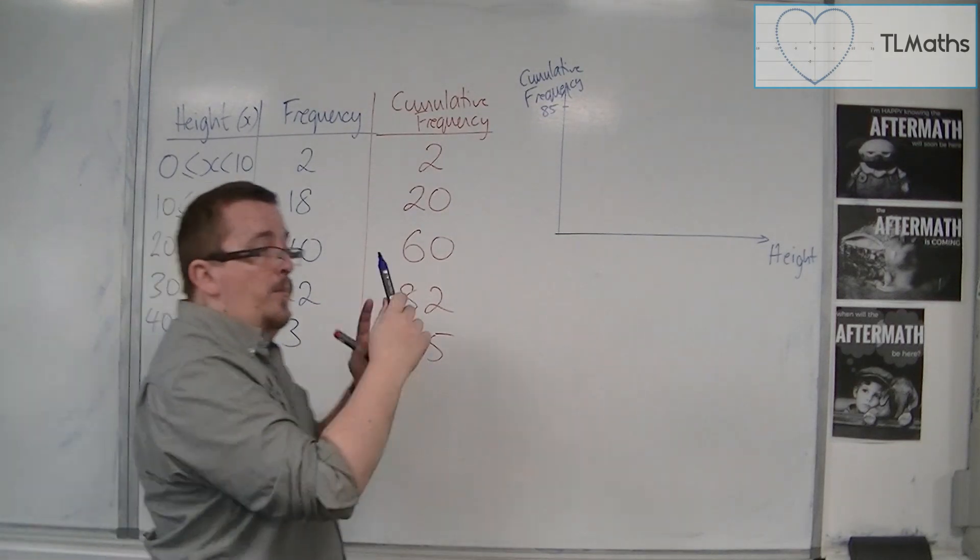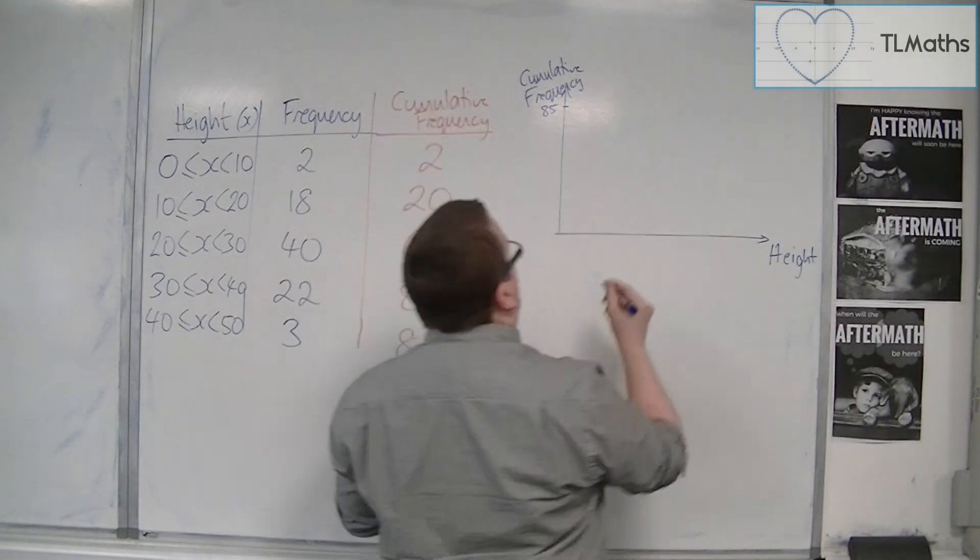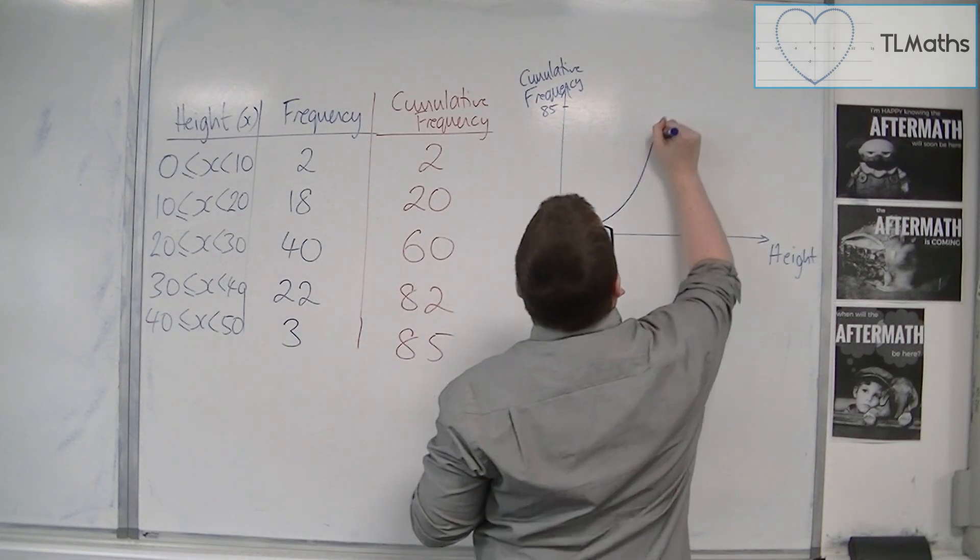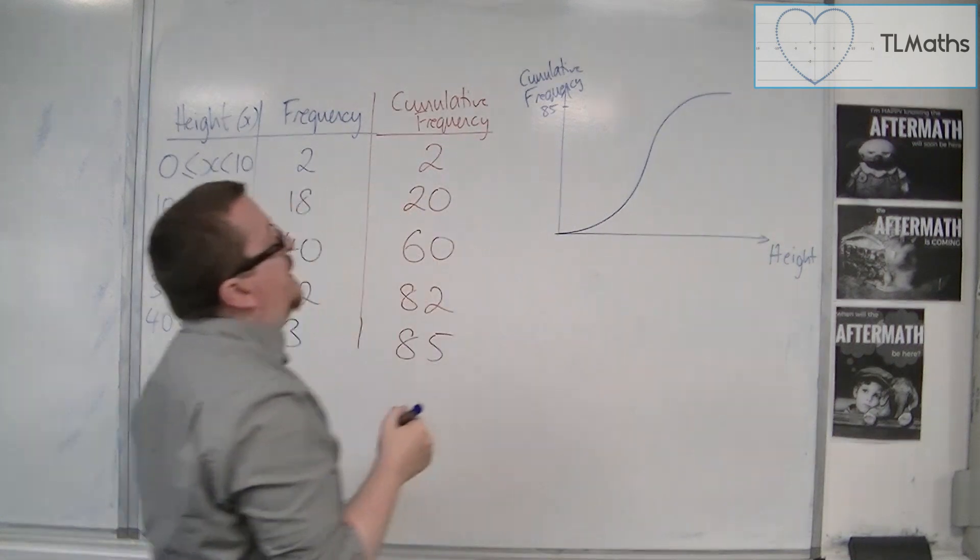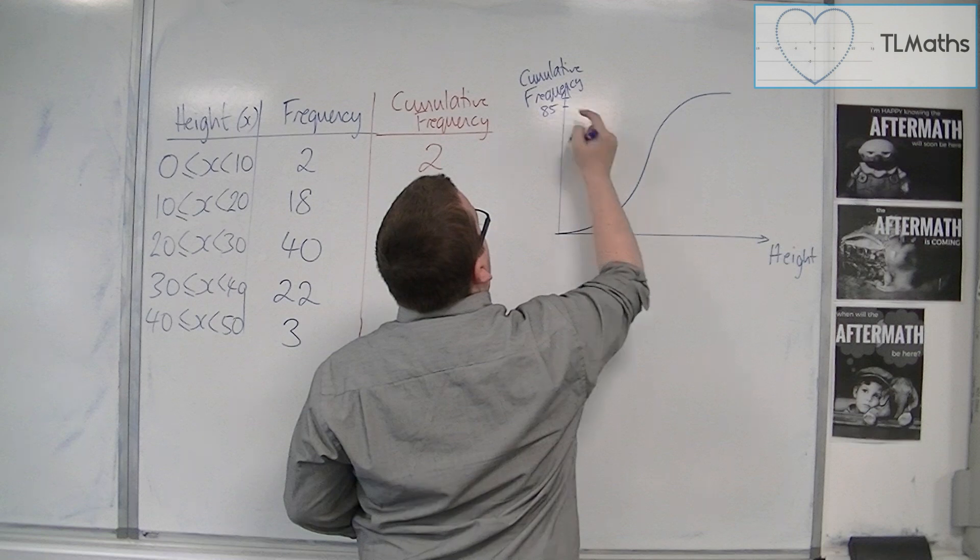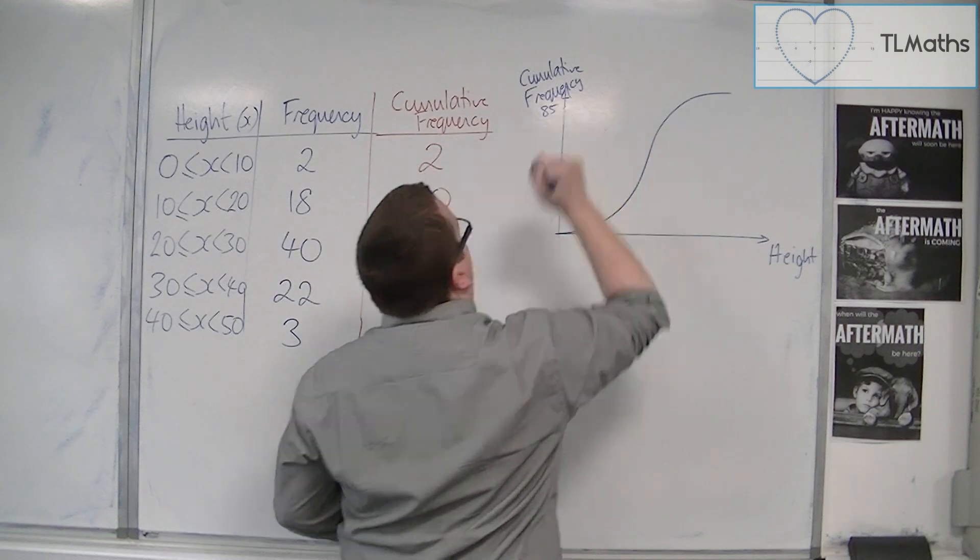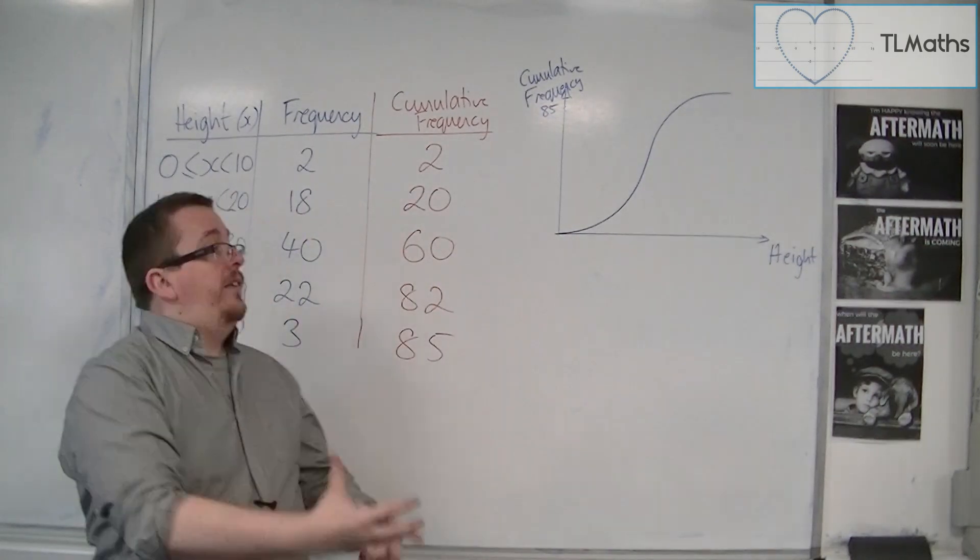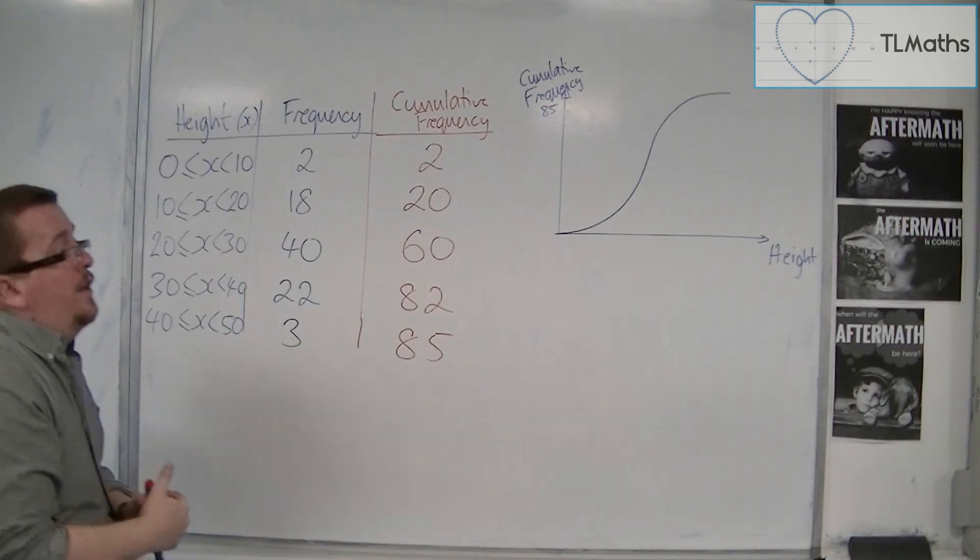And you would then plot the points. And what would usually happen is that the curve that you would get would usually look something like this, this kind of elongated S. There's 85. And this is the way that the graph would usually look.